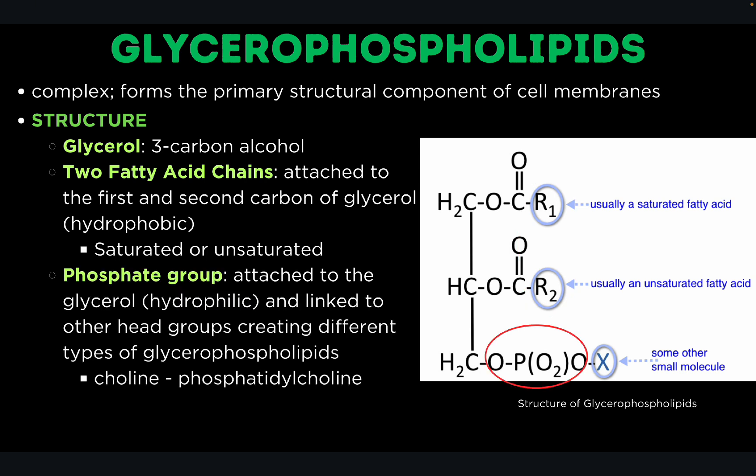The last component is the phosphate group, which gives the hydrophilic property of glycerophospholipids. Here, the phosphate group is linked to other groups, which creates different types of glycerophospholipids. For example, when choline is attached to the phosphate group, it is called phosphatidylcholine.